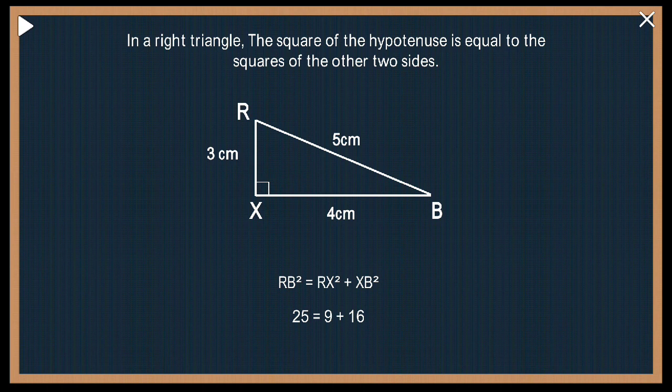So 5 into 5 will become 25. RX is 3, so 3 square is 9 plus XB is 4, 4 square is 16. If you look, left hand side is 25 as it is, right hand side will become 9 plus 16 which is equal to 25. So this is the basic idea of the proof.